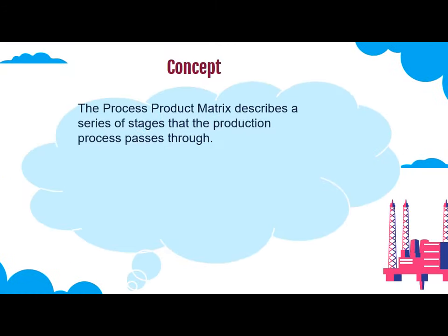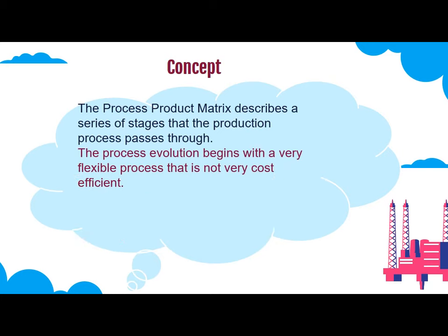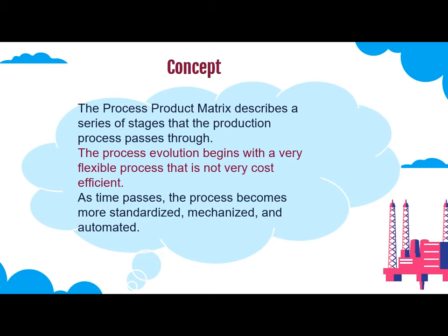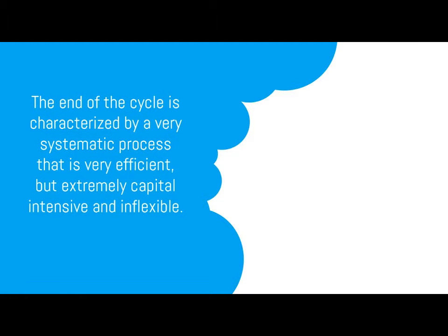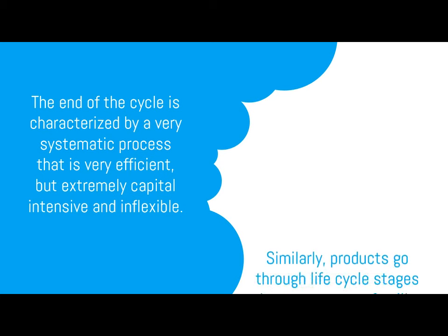The Process-Product Matrix describes a series of stages that the production process passes through. The process evolution begins with a highly flexible process that is not very cost-efficient. As time passes, the process becomes more standardized, mechanized, and automated. The end of the cycle is characterized by a well-systematic process that is very efficient, but extremely capital-intensive and inflexible.